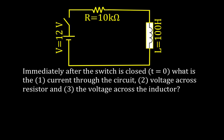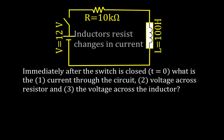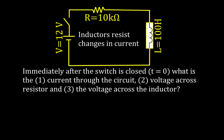We want to know what is the current through the circuit, what is the voltage across the resistor, and what is the voltage across the inductor. Inductors resist changes in current — that's their job. Capacitors resist changes in voltage, and inductors resist changes in current. So when we first close the switch, because that is the point when the inductor can give the most resistance to the current, the current actually is zero.